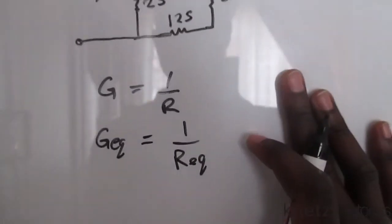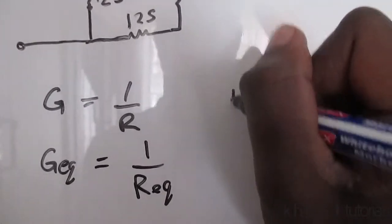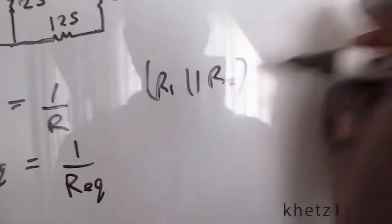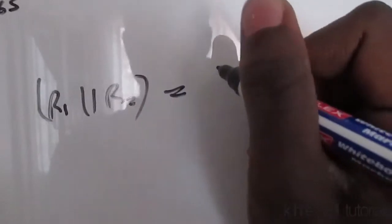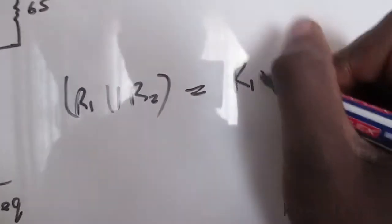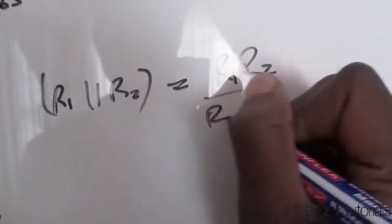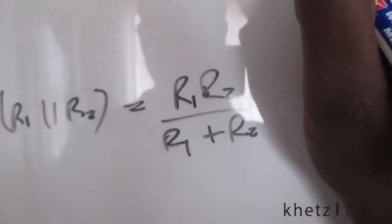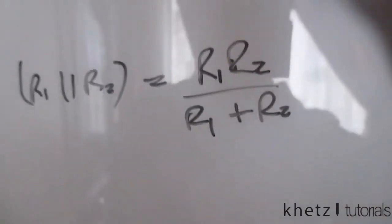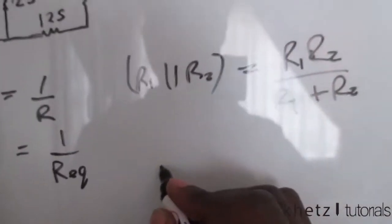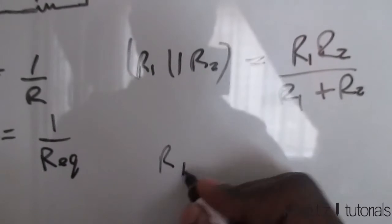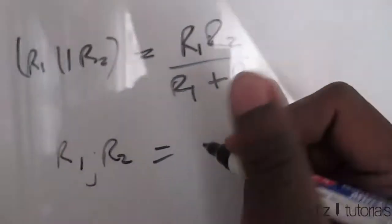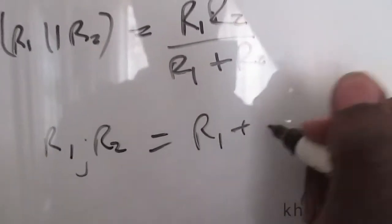So if you look, we have, if R1 is parallel to R2, then we can apply the formula which says R1 times R2, R1 plus R2 to find the equivalent resistance of a parallel connection of resistors. This is what we do. And if we have R1 in series with R2, then we simply add the two. So just say R1 plus R2.